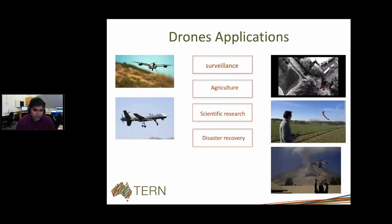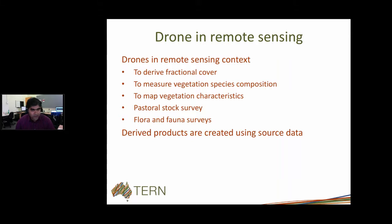Some of the applications: drone technology started in surveillance and now it's a favourite in agriculture and widely in the environmental space as well — I would call it scientific research. It's also used in disaster recovery, especially in places where it's very difficult to send a human being, so drones are quite popularly used. We use drones in the remote sensing capability aspect. In this context, we use drones to derive fractional cover, measure vegetation species composition, map vegetation characteristics, do pastoral stock takes, and even to do flora, fauna, and kangaroo surveys.